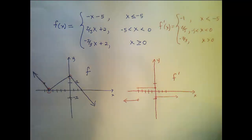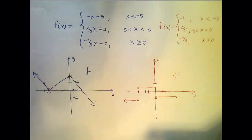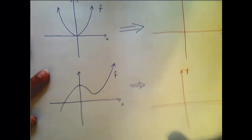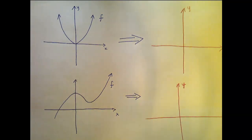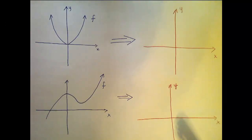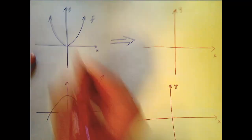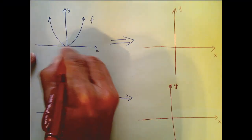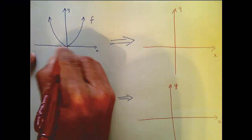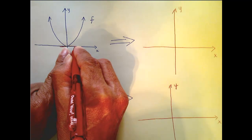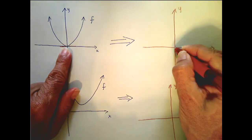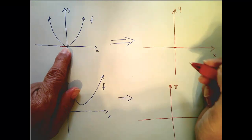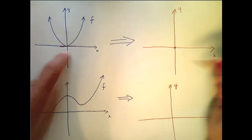Let's look at one that's not so precise — we could do some rough sketches. Starting with this first one, if I were to draw the tangent line here, it is a horizontal line, which means its slope is 0. So what I know is that my derivative function is 0 when x is 0.